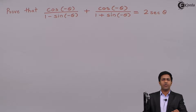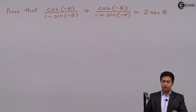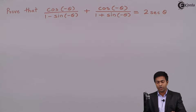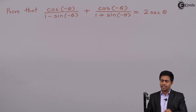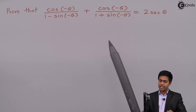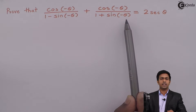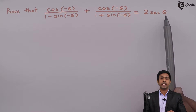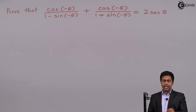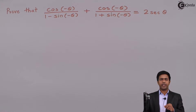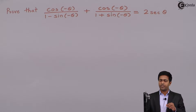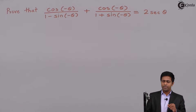Hello friends. Here we have to prove that cos(-θ) / (1 - sin(-θ)) + cos(-θ) / (1 + sin(-θ)) is equal to 2 sec θ. If you observe the left hand side, we have the trigonometric ratios sin and cos, whereas on the right hand side we have sec θ.